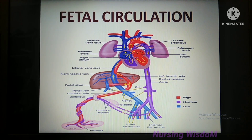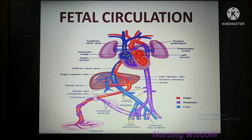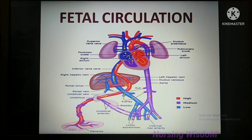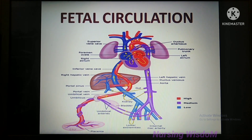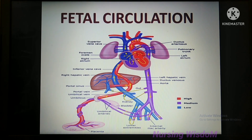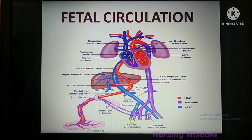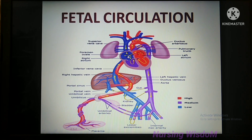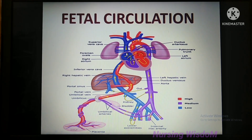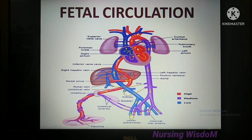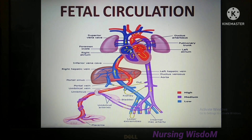From the left atrium, blood goes to the left ventricle. During ventricular systole, blood reaches the ascending aorta and then the aortic arch. From the aortic arch, most blood supplies the upper part of the body, myocardium, and head via the coronary, carotid, and subclavian arteries respectively. The remaining blood goes to the descending aorta to supply the lower part of the body. Deoxygenated blood from the head and upper part of the body returns to the right atrium via the superior vena cava. Blood entering from the superior vena cava enters at a different angle to blood from the inferior vena cava.